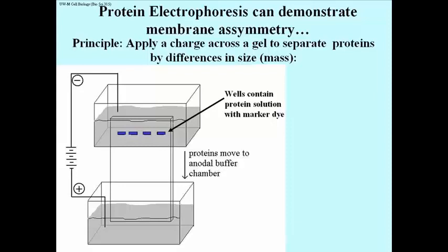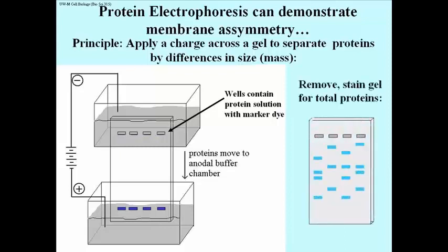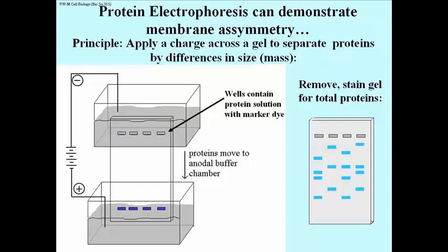We're going to separate these proteins based on size. When we turn the juice on, there is movement towards the anodal buffer chamber. What you saw moving was a blue dye that we threw into the protein solution, so that we could follow the electrophoresis until the blue dye reached the bottom of the gel, and then we turn it off. The blue dye has been chosen so that it moves faster than any proteins in the solution. We take the gel out of the apparatus and stain it with a colorimetric dye that recognizes proteins generally and turns them a kind of light blue.